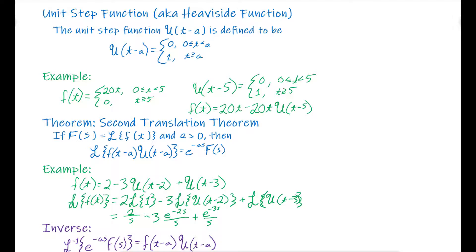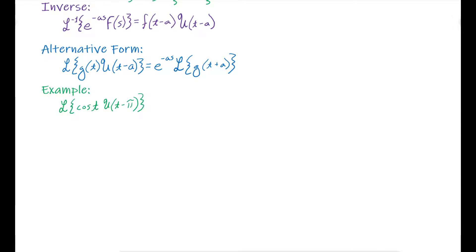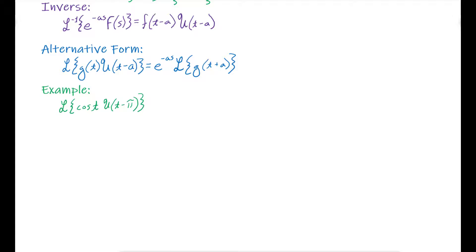That is our Laplace transform with the unit step function involved. Just like we did with the Laplace transform itself, we need to be able to do the reverse — take the inverse. The inverse Laplace transform of something that looks like e to the negative as times F(s) is going to be f(t minus a) times the unit step function of t minus a.